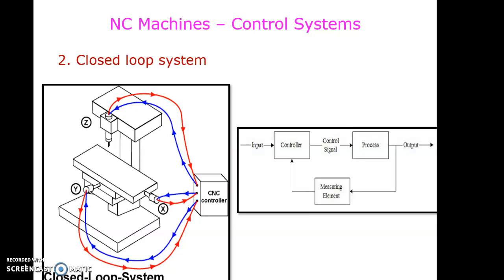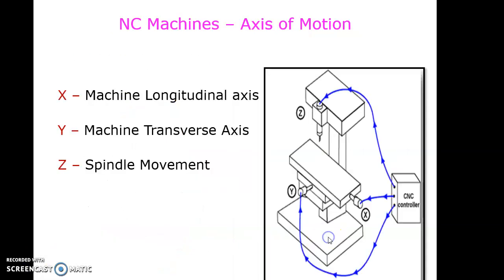If an industry's main motive is to reduce cost by compromising accuracy, then they can use an open loop system. Otherwise, a closed loop system is the main necessity, as it involves higher accuracy along with sophistication.